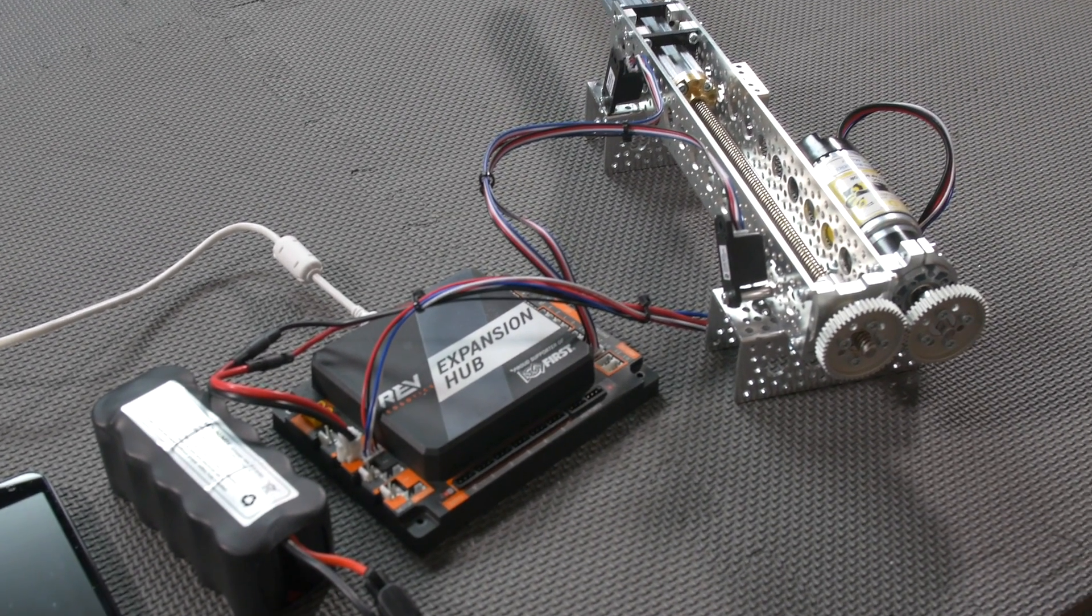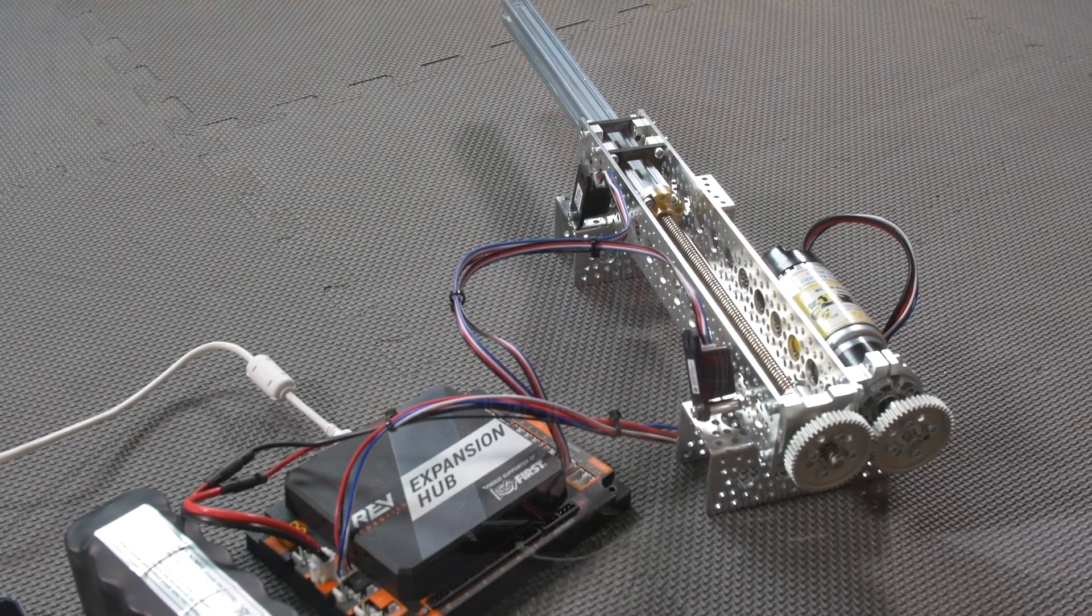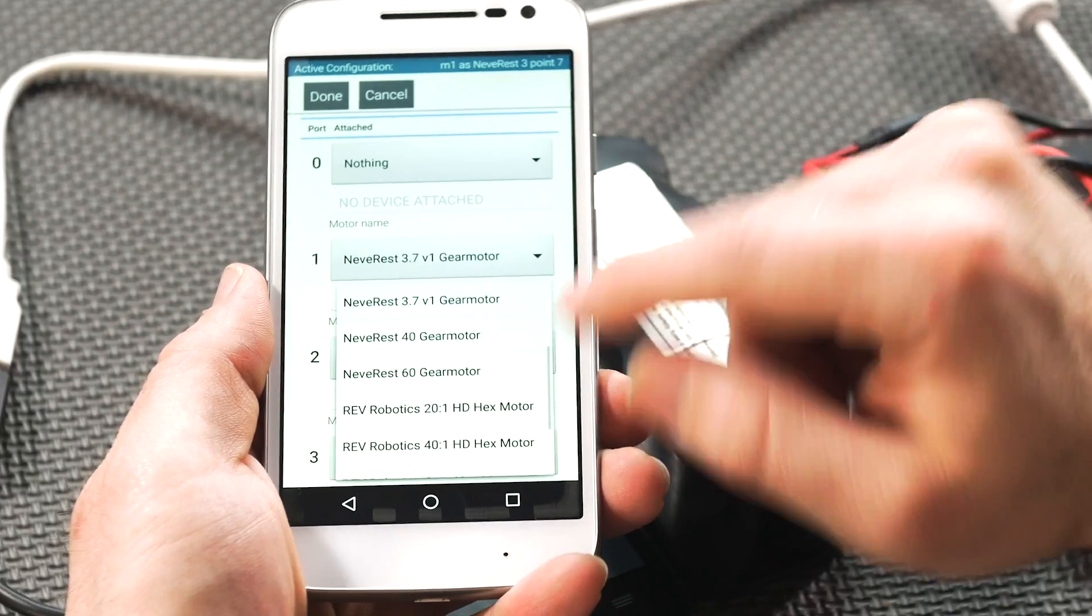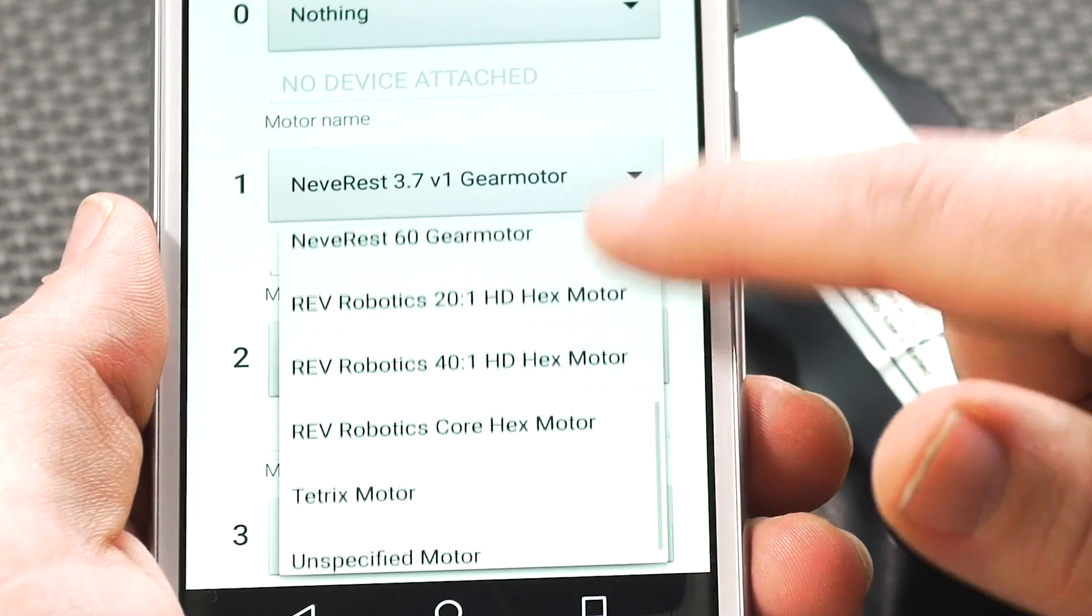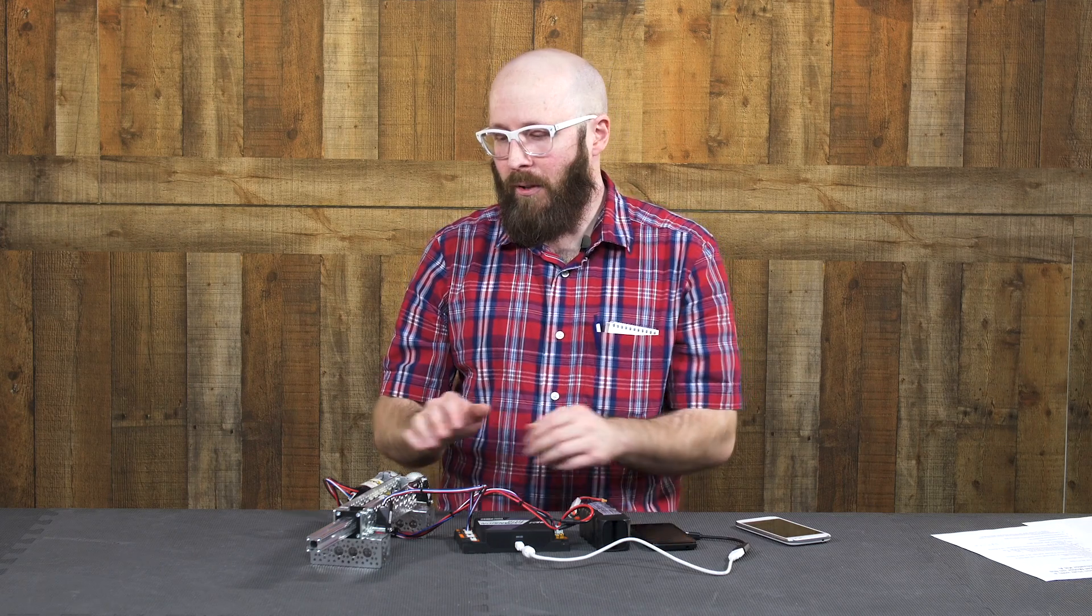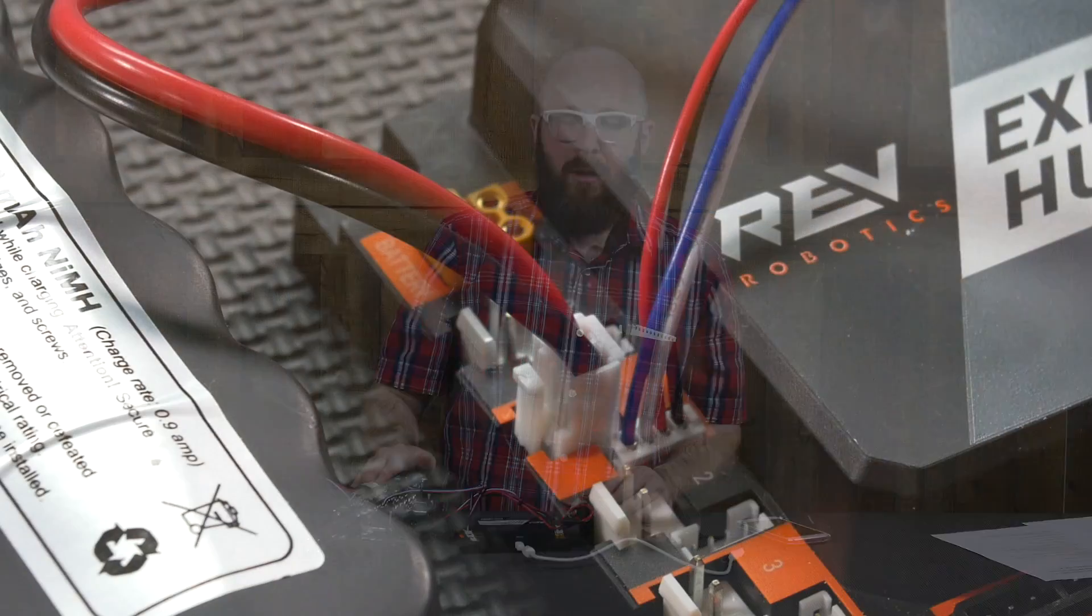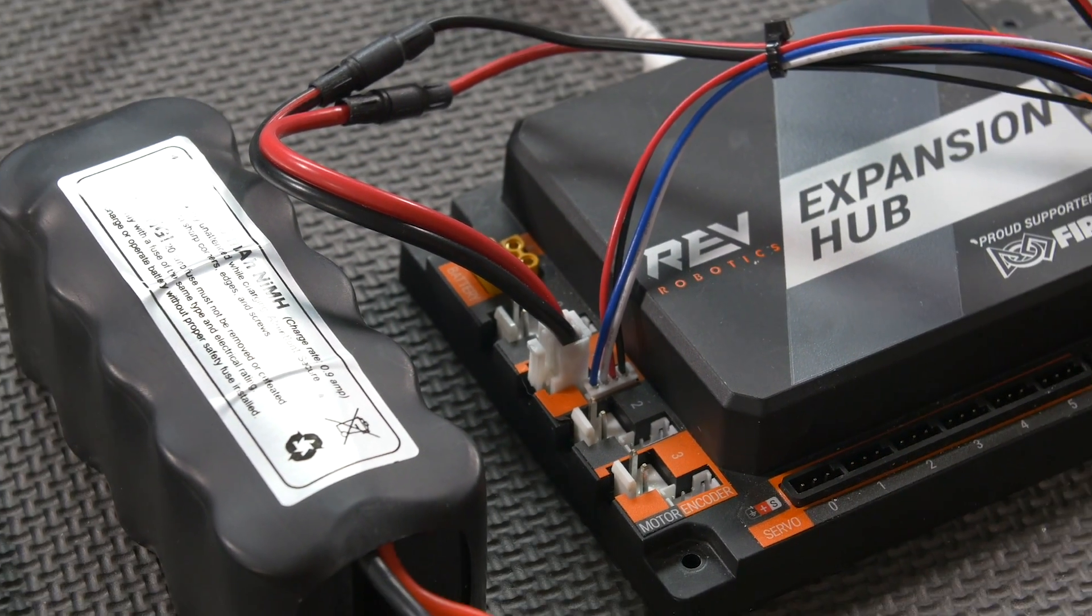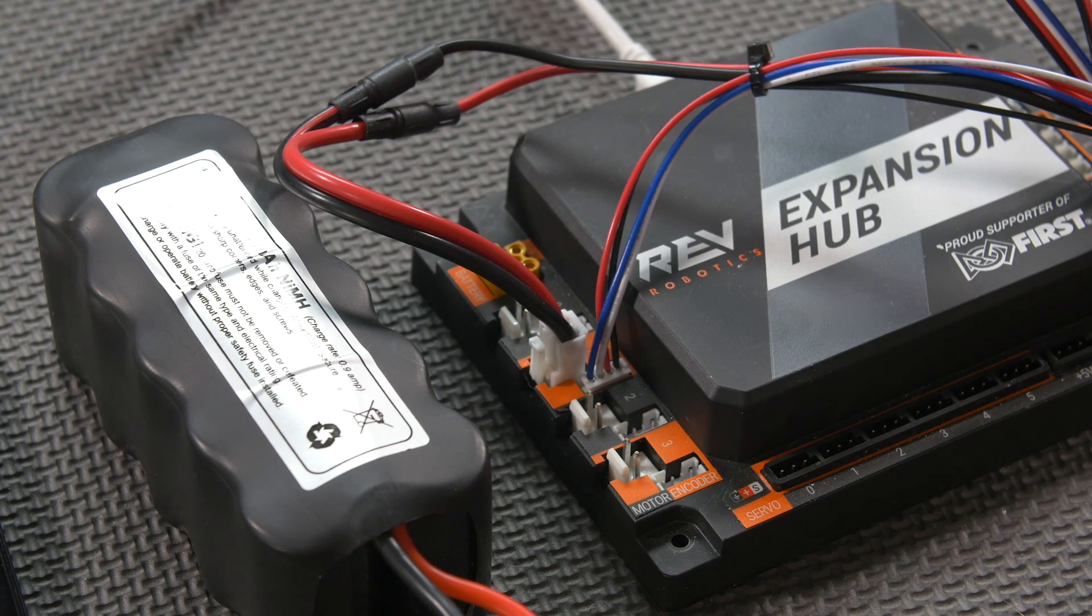So if you've used a Yellow Jacket motor with the Rev Expansion Hub, you've no doubt noticed the lack of the Yellow Jacket in the drop-down list when you go to configure your robot on your phone. And this kind of boils down to the timing with which things happen when this was made legal versus when all the work was already done on the Rev Expansion Hub. So if you're wondering which option to choose, there are a couple different valid options.